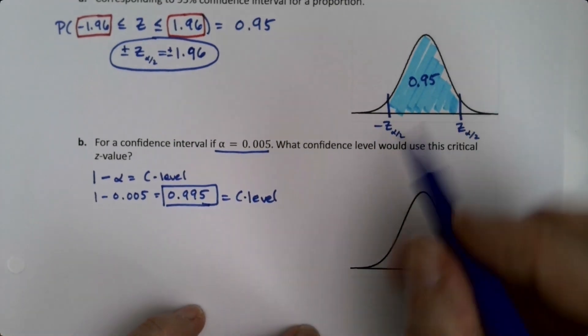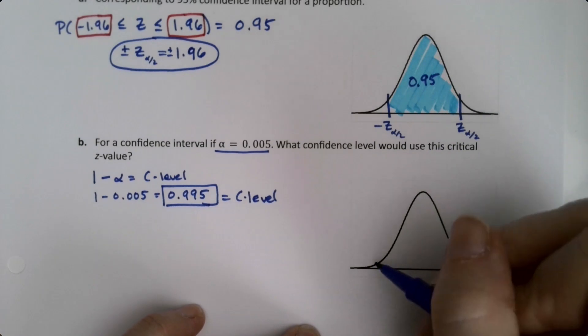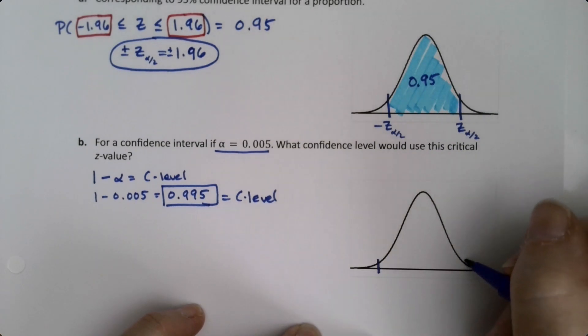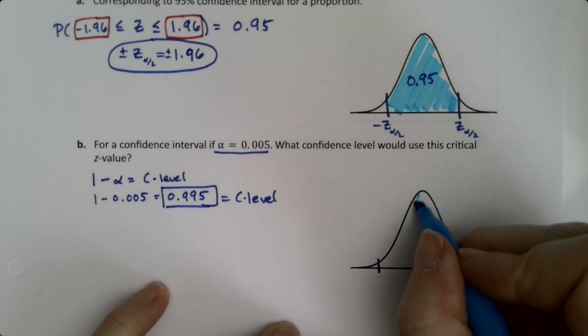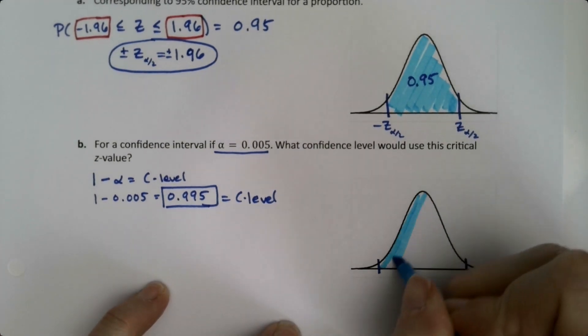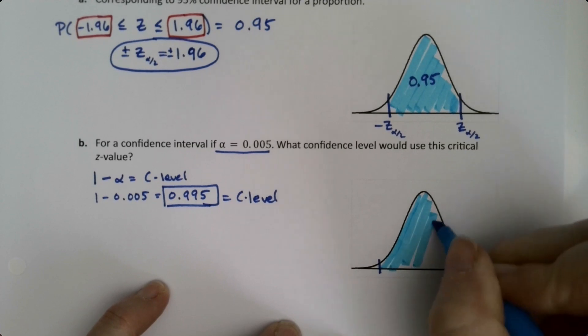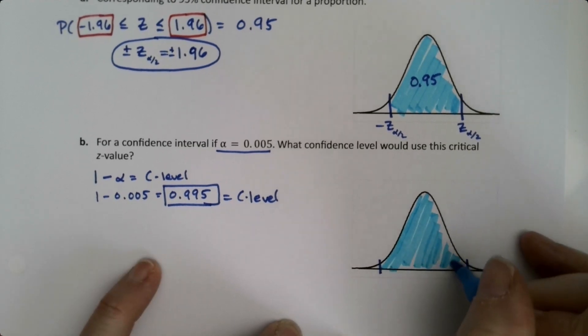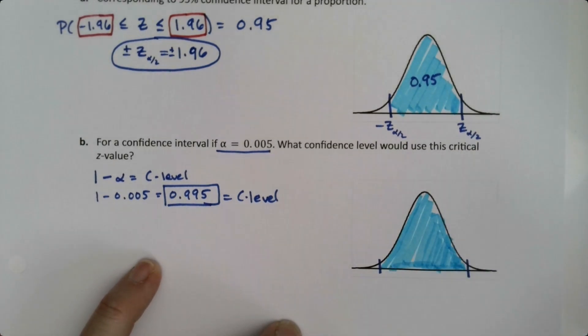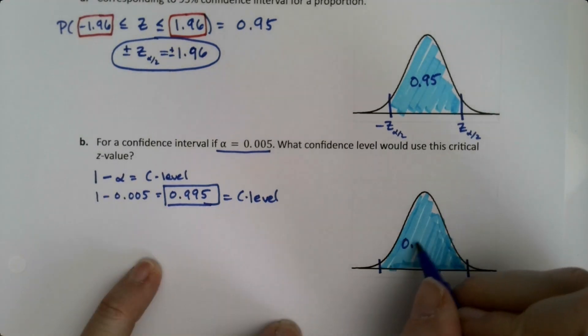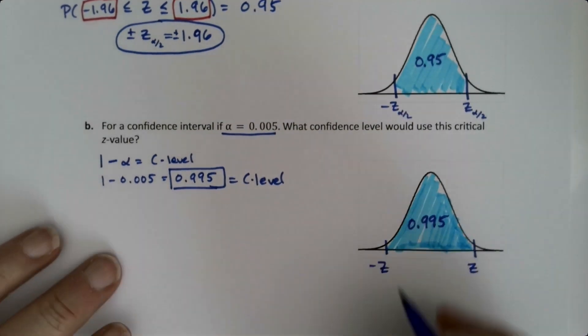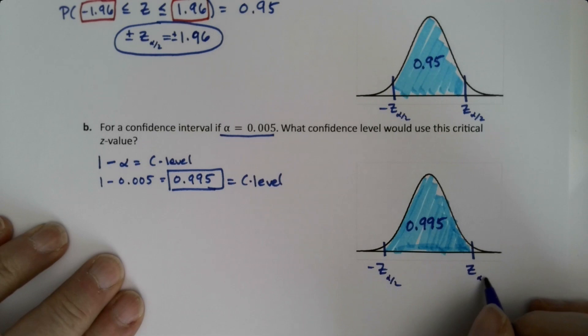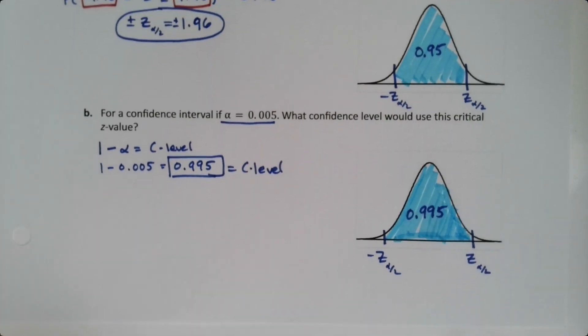And then we just draw another picture. Now, this was 0.95 shaded. 0.995 should actually be a little bit more shaded, right? Because it's bigger confidence. So, it's a bigger center. So, I'm going to shade a little bit further. A little bit more. There we go. Not perfect, but it'll work. Okay, so this is 0.995. This is negative z. This is positive z. I'll put the alpha over 2 notation in it just to be more fancy.